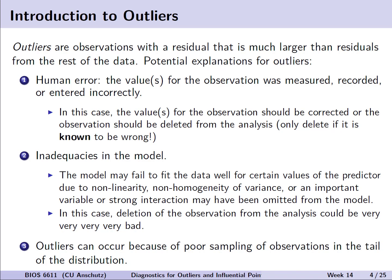Another reason for outliers may be that we haven't chosen the best model. The model may fail to fit the data well for certain values of the predictor due to issues such as non-linearity, non-homogeneity of the variances, or we might be missing an important variable or a strong interaction that was omitted from the model. In this case, deleting the observation from the analysis could be very bad.